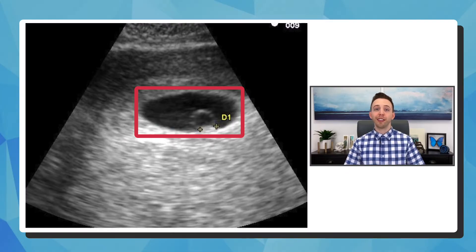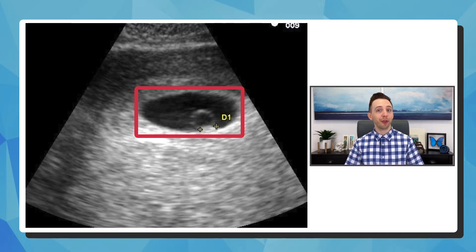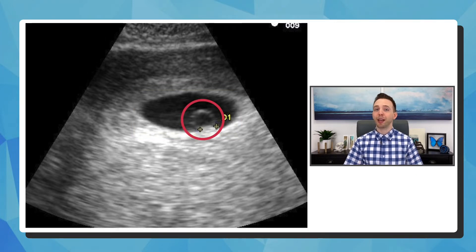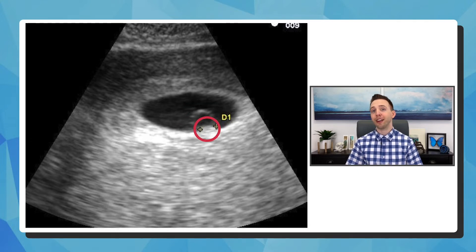The first structure you can see on an ultrasound is called the gestational sac. This is the sac that the embryo grows in, and it contains amniotic fluid. Next, the yolk sac becomes visible, which is a sac attached to the embryo. Finally, the embryo itself becomes visible, and when it's large enough, a heartbeat can be seen.